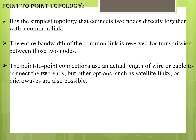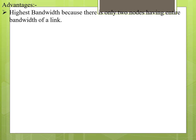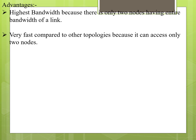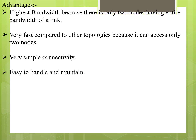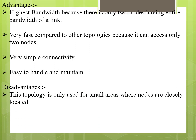In point-to-point topology, the connection between two nodes is made via wires. For point-to-multipoint topology especially, satellite links or microwave transmission can also be used. Advantages include highest bandwidth since only two nodes share it, very fast data transmission compared to other topologies, and very simple connectivity that is easy to handle and maintain.